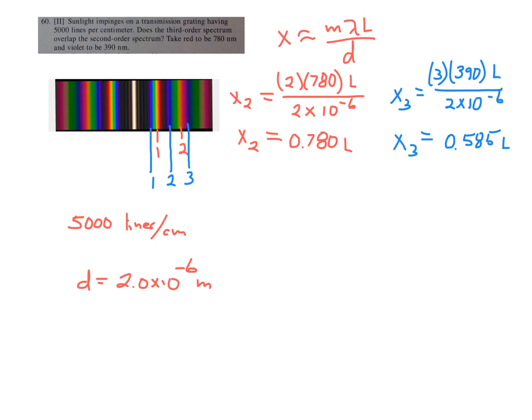But for the blue, or the violet, because it's got half the wavelength, the third order would have appeared at 0.585L. It would have appeared before the second red, which in my diagram there, it doesn't. It appears after the second red.